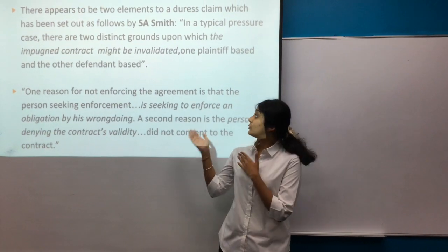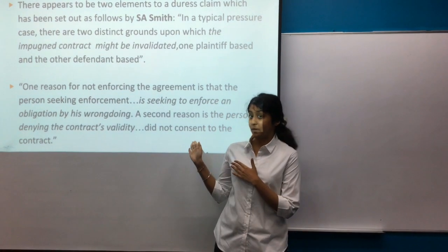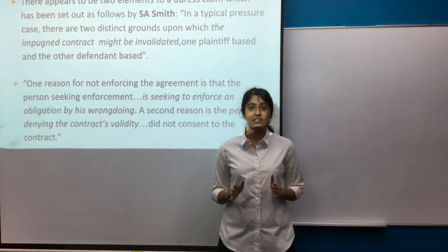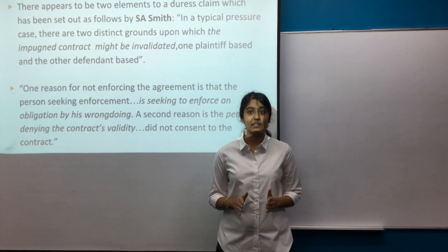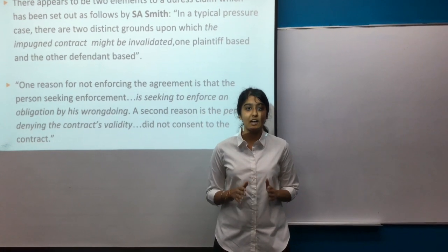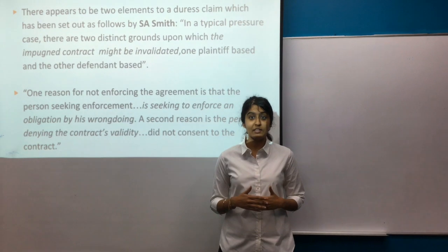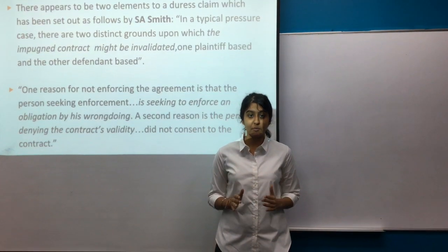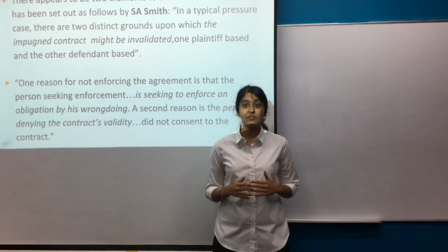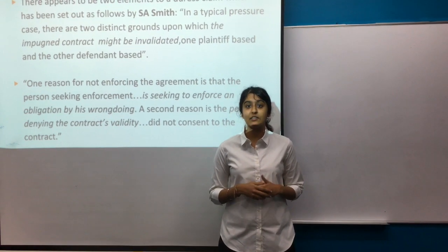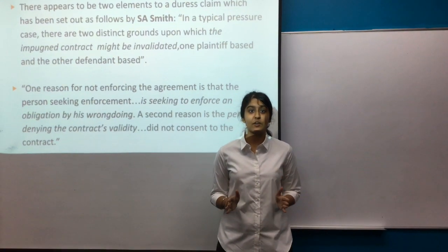There appear to be two elements to a duress claim. In a typical pressure case, there are two distinct grounds upon which the impugned contract may be invalidated — one plaintiff-based and the other defendant-based. One reason for not enforcing the agreement is that the person seeking enforcement is seeking to enforce an obligation by his wrongdoing. A second reason is that the person denying the contract's validity did not consent to the specific contract.